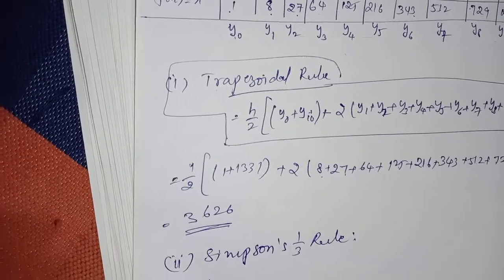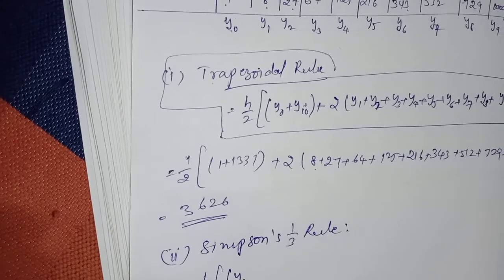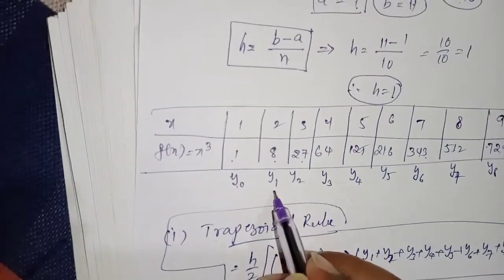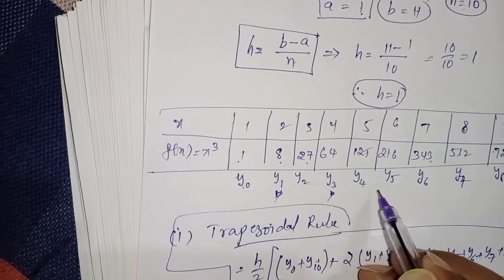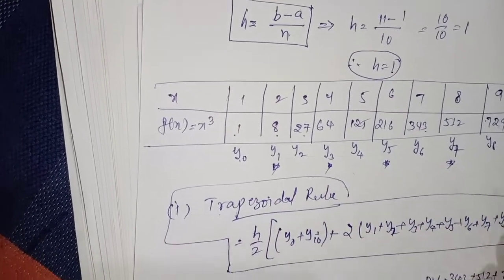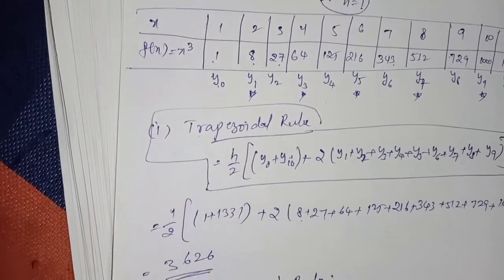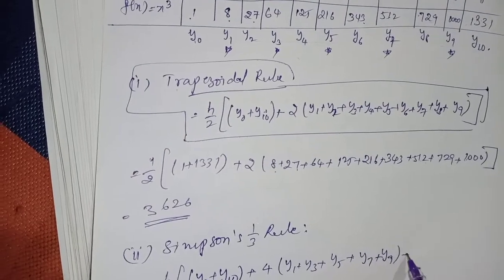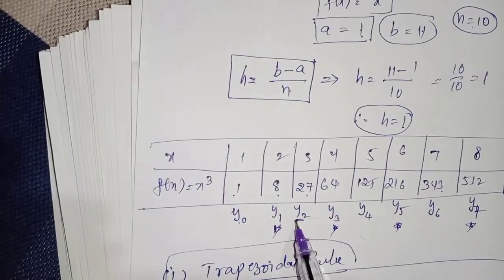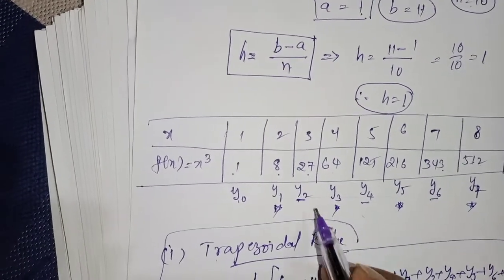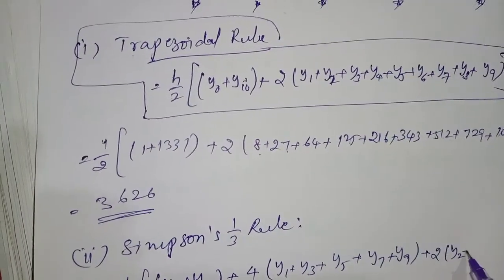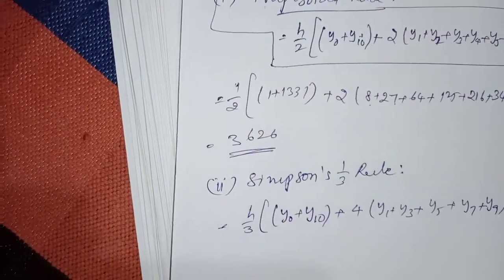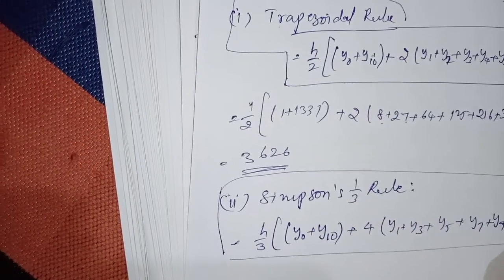Next, apply Simpson's 1/3rd rule. The formula is: (h/3) × [y₀ + y₁₀ + 4(odd ordinates) + 2(even ordinates)]. The odd ordinates are y₁, y₃, y₅, y₇, y₉, and the even ordinates are y₂, y₄, y₆, y₈. Substitute these values into the formula.